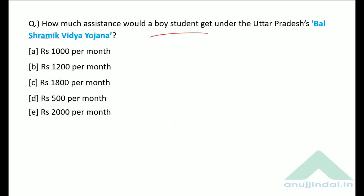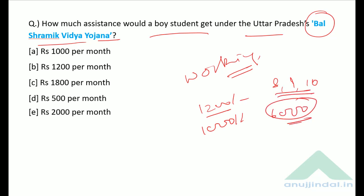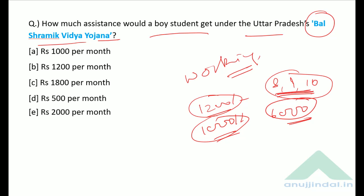How much assistance would a boy student get under the Uttar Pradesh Bal Shramik Vidya Yojana? This scheme was launched to motivate working children to attend school. Girls will get Rs. 1,200 per month and boys will get Rs. 1,000 per month. On passing classes 8th, 9th, and 10th, an incentive of Rs. 6,000 will be provided to both boys and girls. The correct answer is option A — Rs. 1,000 per month.